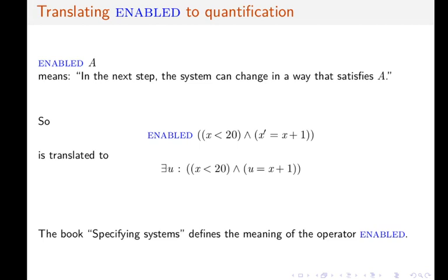So the formula ENABLED of x less than 20, etc., which really is ENABLED of Next, where Next was defined in one of the previous slides, is translated to the formula that contains existential quantification.